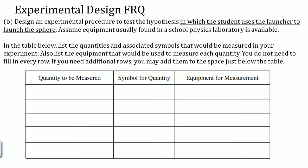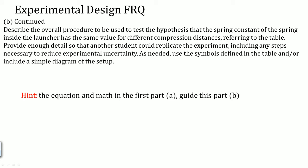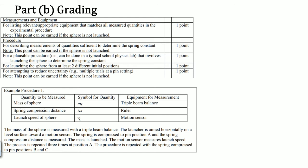After Part A, there will always be a step where you list the equipment, then go over a procedure. My hint when designing the procedure or data chart is to use the equation from the previous step to guide you. We found K equals 2mgh over x squared, so the variables you need to measure are mass (m), height (h), and spring compression distance (x), since g is a constant.